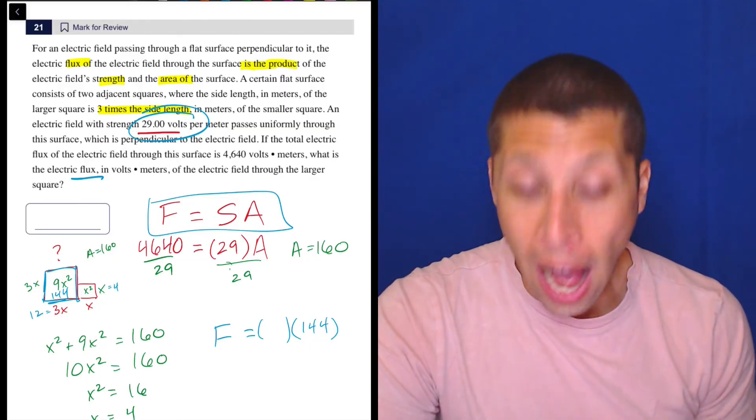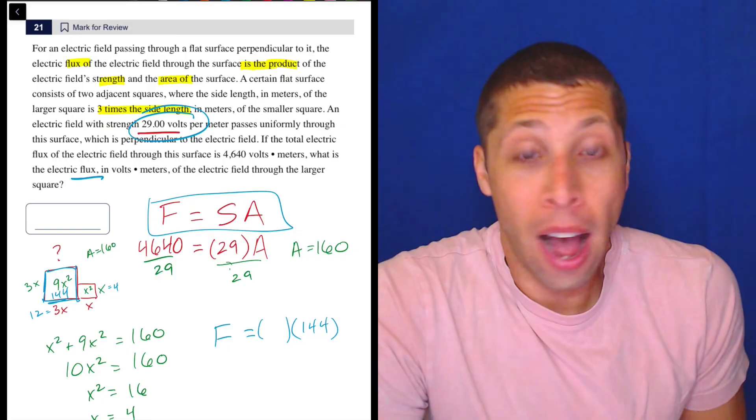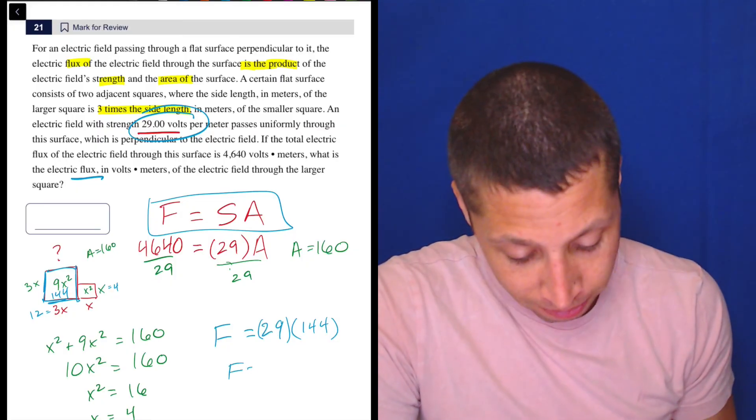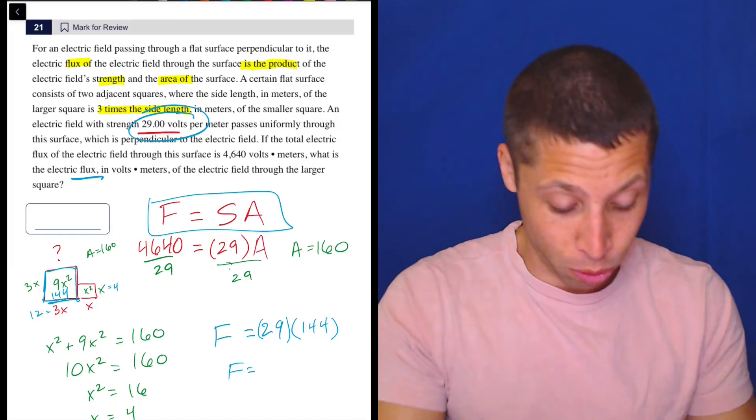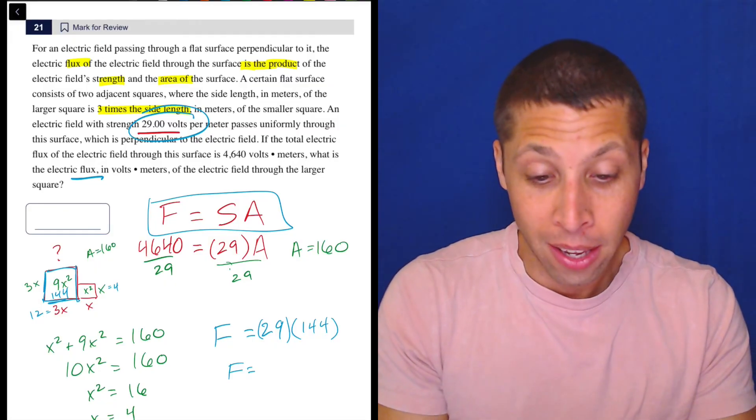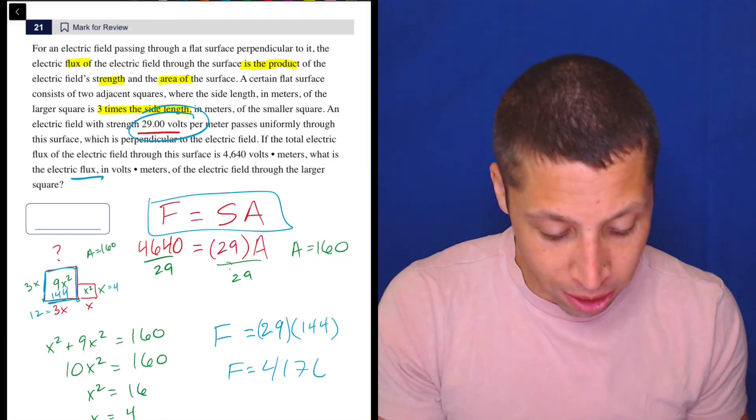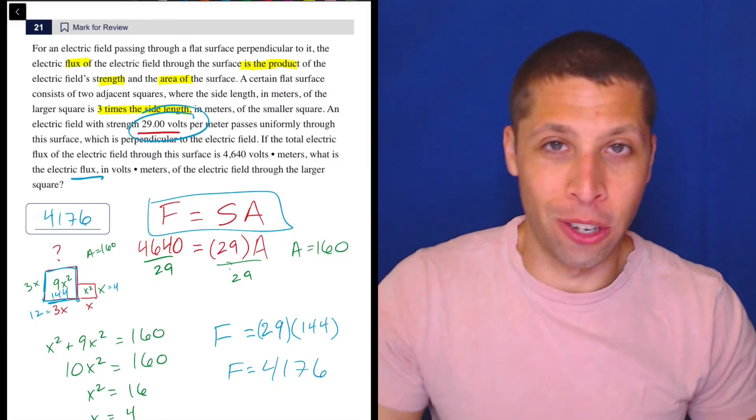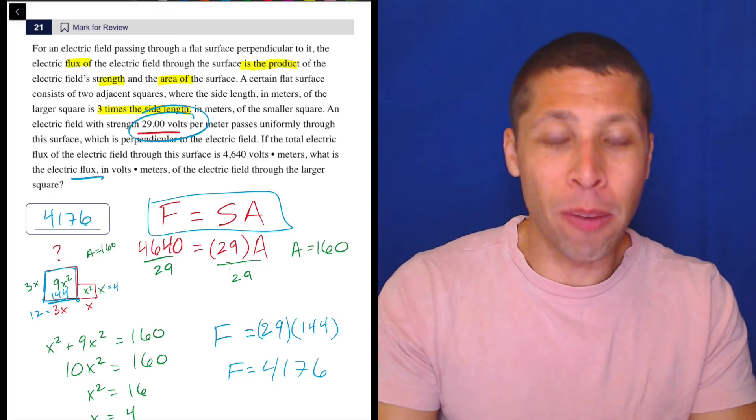I would just be like, okay, I need a strength. I've only got one number for it. Let me put it in. And now what is the flux? It's 29 times 144. Get the calculator again. And that's 4,176. So for lack of anything better to do, I would put that answer in and move on.